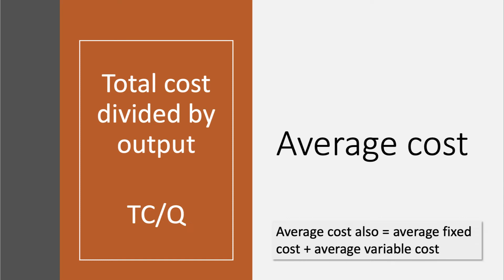Average Cost, also known as Cost Per Unit, is simply Total Cost divided by Output. Another way of expressing it is to say that Average Cost is also equal to the Average Fixed Cost plus the Average Variable Cost.